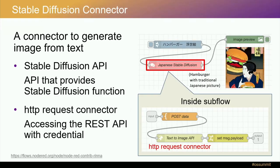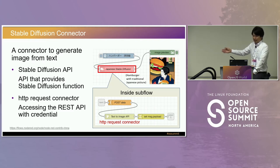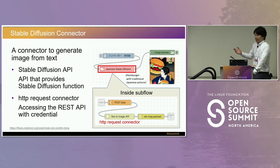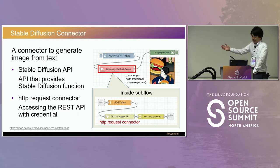This is the stable diffusion connector. As you know, stable diffusion is software that generates images from text data. For example, using 'hamburger with Japanese traditional picture' as a text prompt, the software outputs an image of a hamburger and a woman in a traditional painting. Recently, a company released a stable diffusion API for free. Using this API, we can use stable diffusion via the HTTP Node-RED connector. This is a typical example of a connector to access cloud services using subflow.